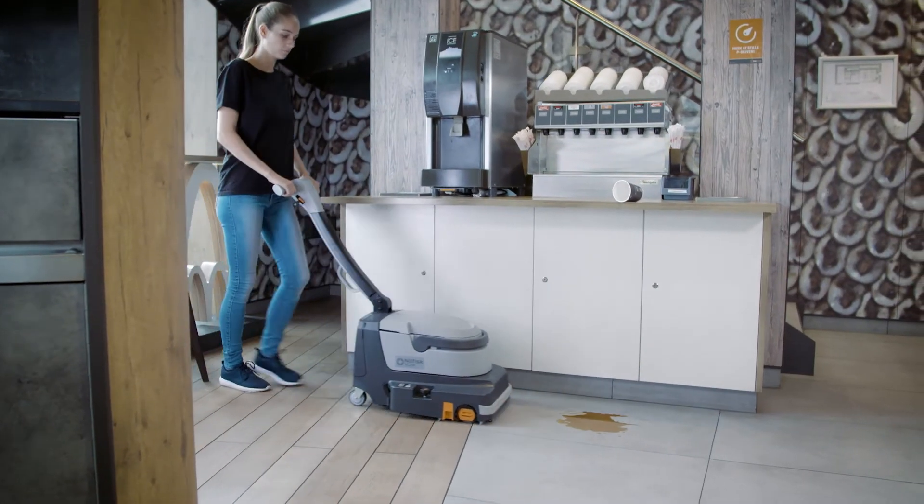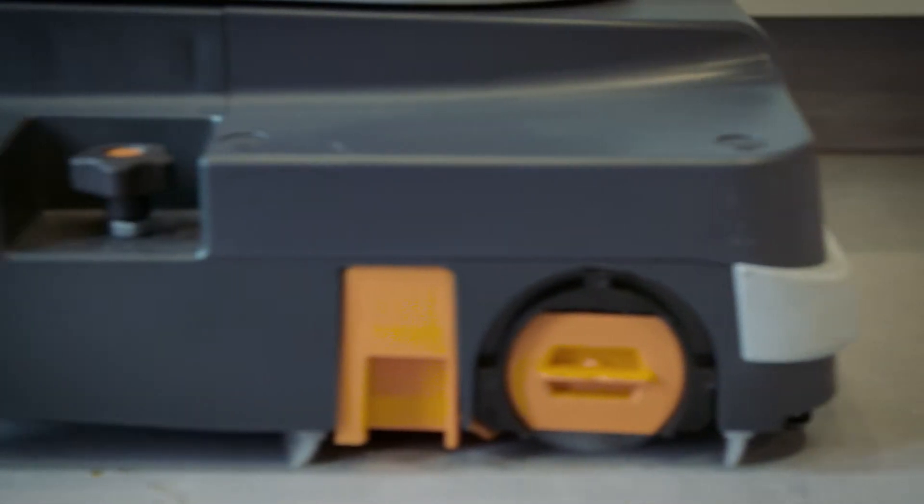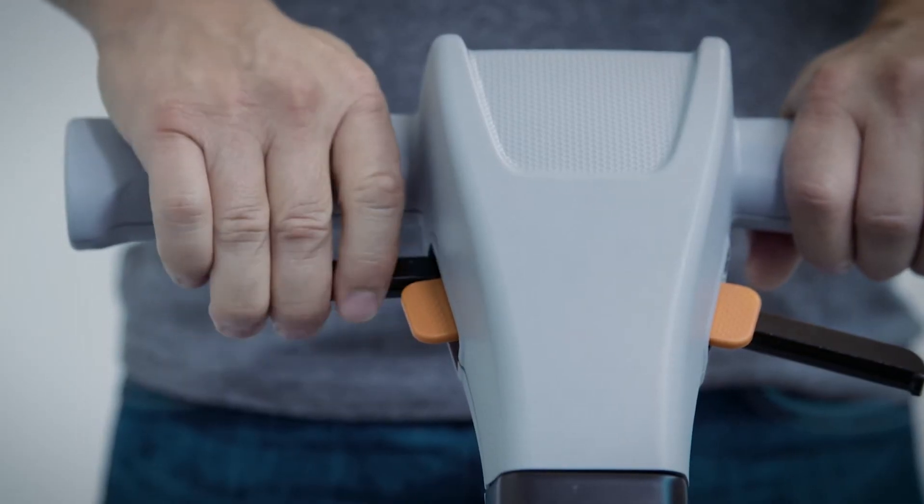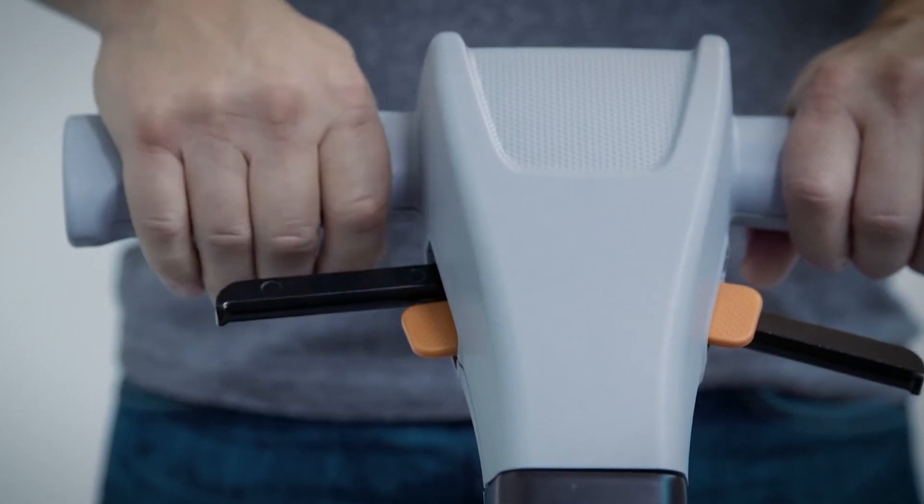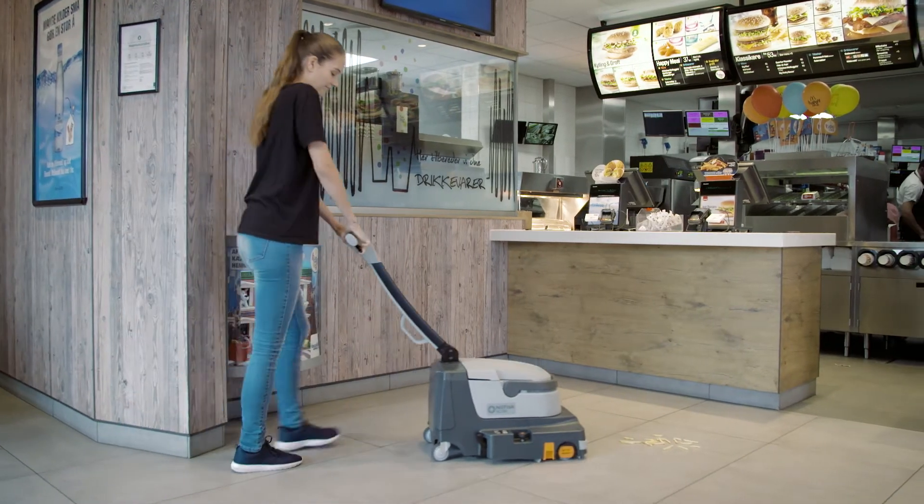The high cleaning performance of the scrubber dryer is ensured by sweeping, scrubbing and drying carried out at the same time. When cleaning, you can lift the front squeegee from the floor by swiftly pushing a lever. This allows easy pickup of larger debris without having to stop.